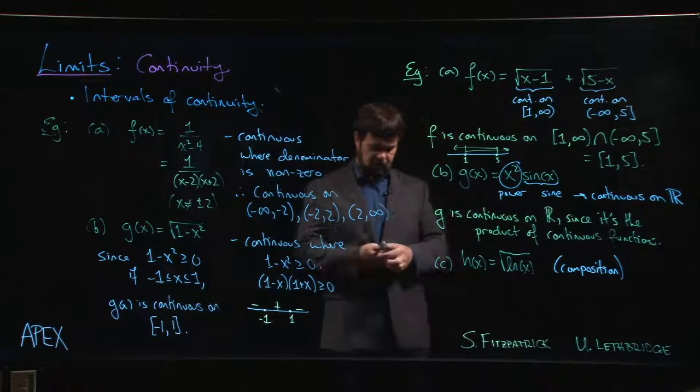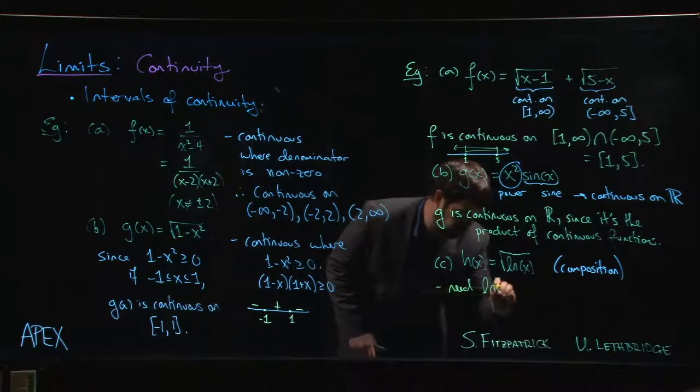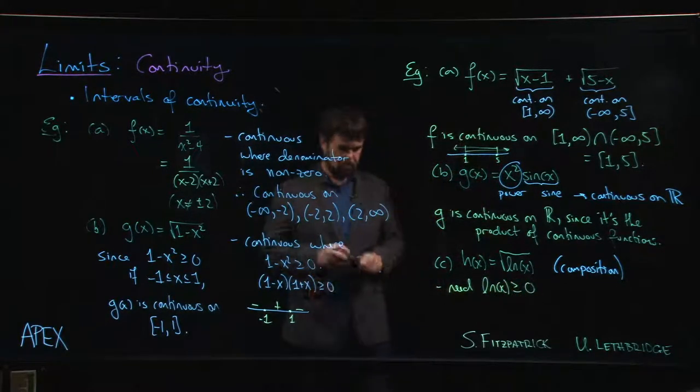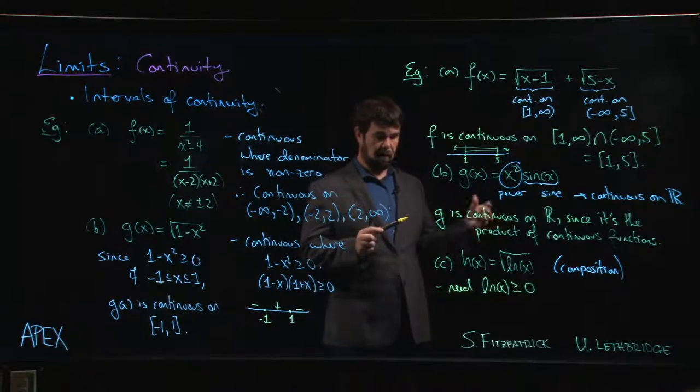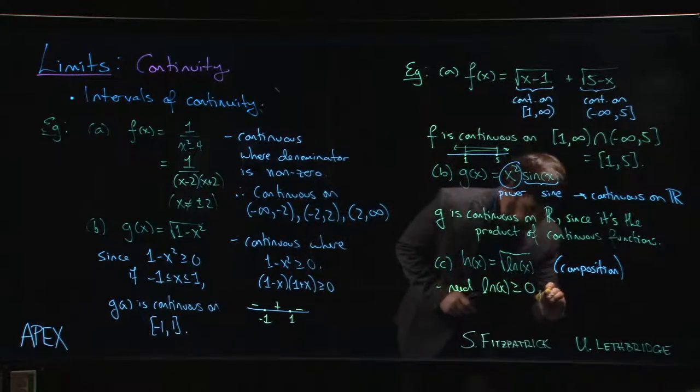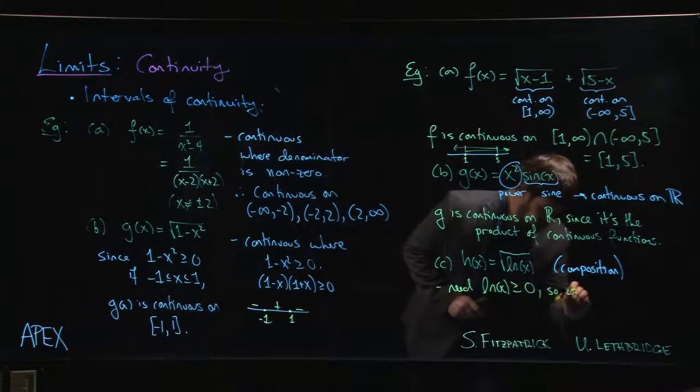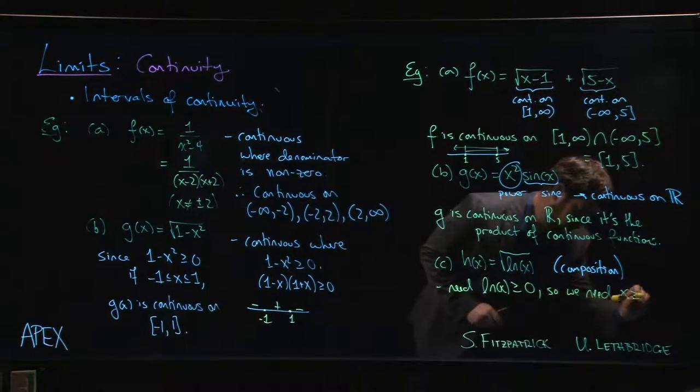So in other words, we need the natural log function to be bigger than or equal to zero. So now we have to think where is the natural log equal to zero, we think back, we say, ah, at one.